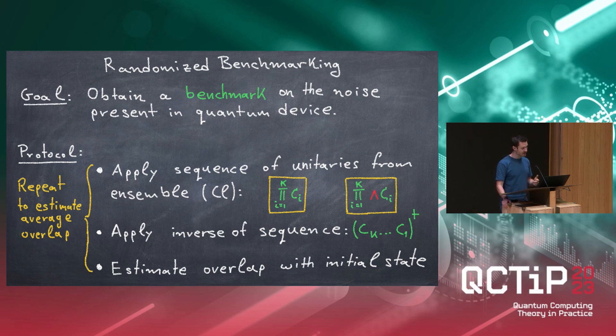You want to know on average how much noise you have when you implement such a unitary. The protocol is relatively simple. You apply a sequence of some length K of uniformly drawn Clifford unitaries onto some prepared state, say the all zero state. Then you apply the inverse of this Clifford, which you can efficiently compute. At this point, you basically have just implemented a fancy identity because you've ideally just undone what you did in your sequence. But of course, there's some noise after each of these Cliffords. When you undo it at the end, you don't actually go back to the initial state.